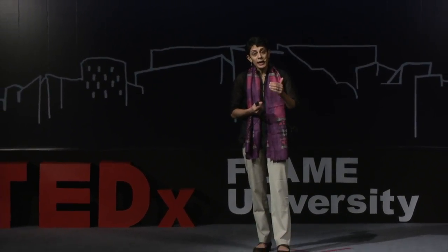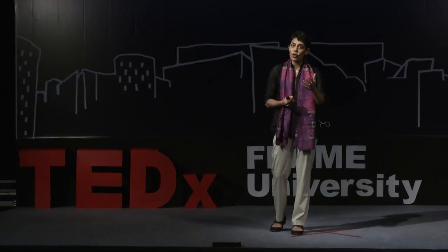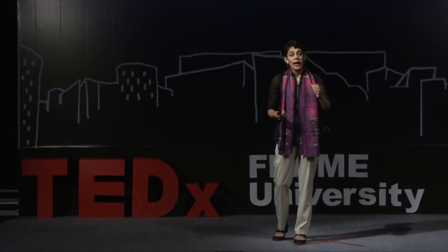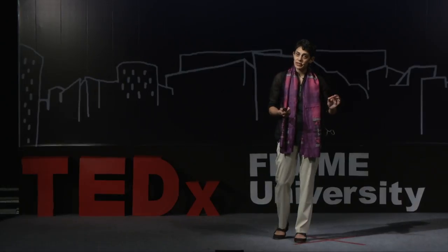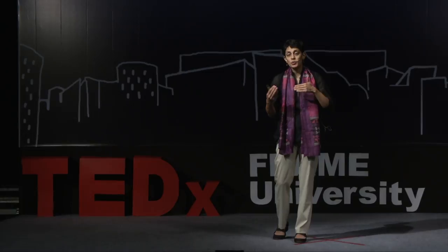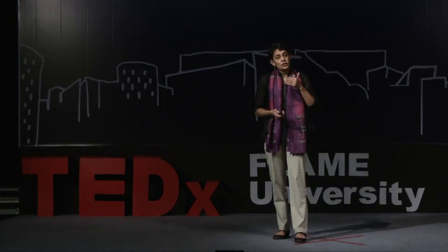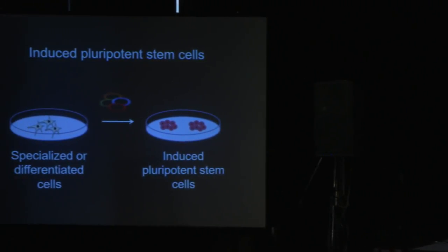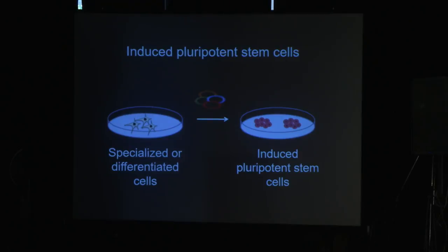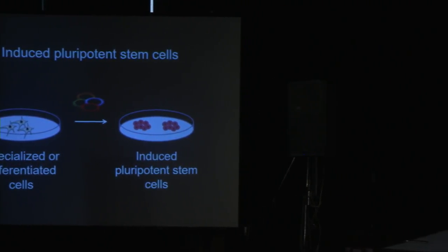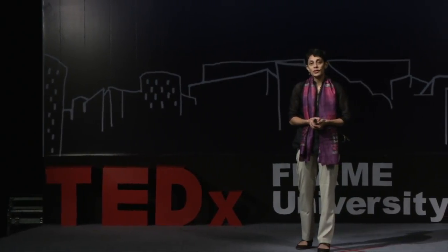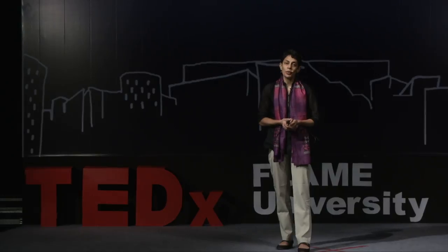What would be perfect in the field of stem cells is if we could get a stem cell with the properties of an embryonic stem cell — one that could produce every cell type in the body — but without the ethical complications, and specific for each individual so there would be no mismatch between donor and recipient. The solution was arrived at in 2007 by work done in Shinya Yamanaka's lab in Japan, where they took specialized cells and introduced certain specific DNA elements into them. These cells went on to give rise to embryonic stem cell-like cells, and this won them the Nobel Prize in 2012. These cells were called induced pluripotent stem cells.